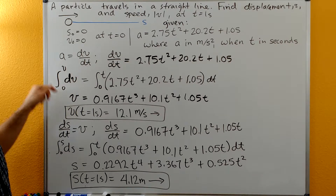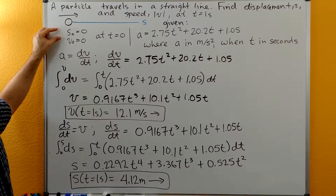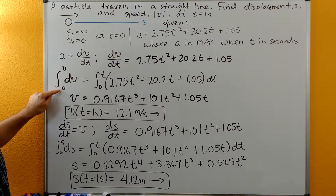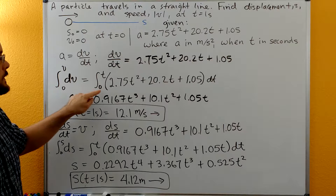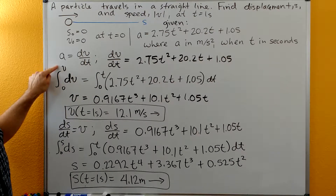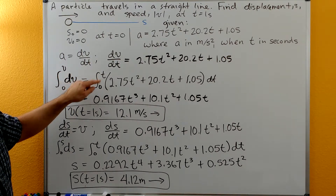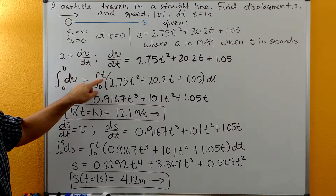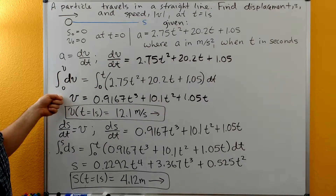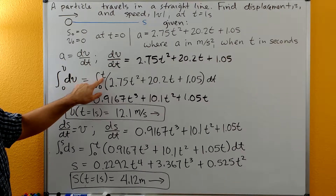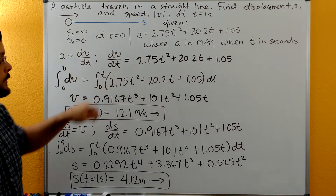Then we go ahead and integrate, plugging in our initial conditions. When t was equal to zero, the velocity was equal to zero. So we plug in a lower limit of zero for velocity and zero for t, and integrate up to a final velocity of v and a final time of t. We do this to get v as a function of time, because we may need to use that function later — so we don't want to just plug in t equal to one second right away.